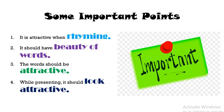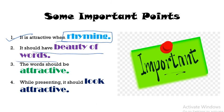Now there are some important points. The poem is attractive when it is rhyming. If it is rhyming, it means that the poem is attractive. Then it should have a beauty of words. Beauty of words means that the words should be very beautiful, not dull words. Beautiful words like nature, birds — these kind of beautiful words should be there in your poem. The words should be attractive not by the font but by their own meaning.